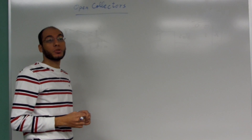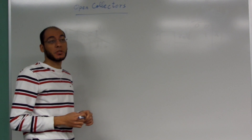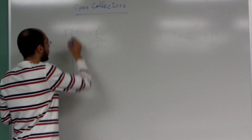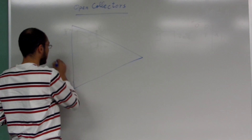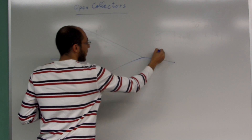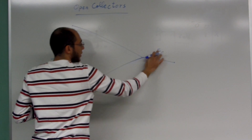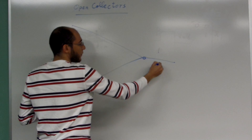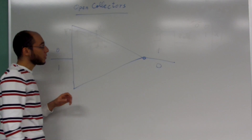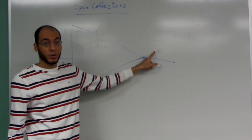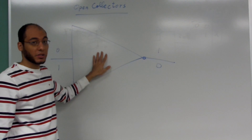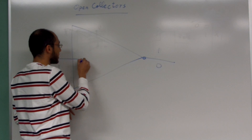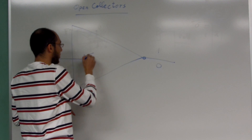Hello everyone. In this video I'm going to let you know why exactly we need a resistor whenever we have an open collector NOT gate. Let me first draw an open collector circuit. Whenever we have a zero, we have a one at the output because that's a NOT gate, and whenever we have a one, we have a zero at the output. Inside the NOT gate there exists a transistor — let's assume it is a bipolar junction transistor.